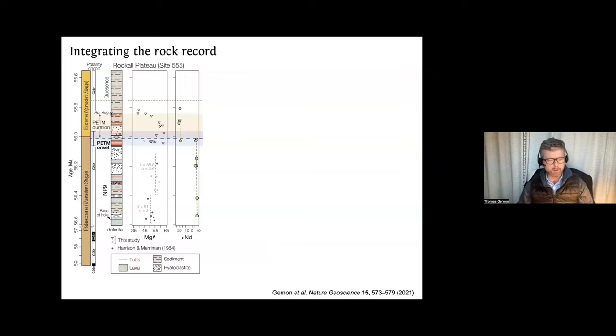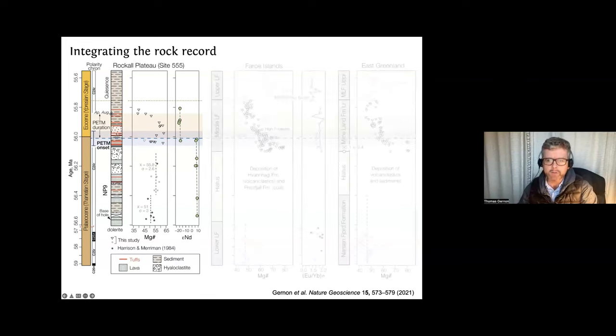So the way to test that is to go to the rock record. We investigated about 10 years ago the Rockall Plateau, which was drilled in the 1980s. We revisited some core. And what we find is an interesting increase in the volcanism, the frequency of volcanic tuffs at this time during the PTM, which have interesting geochemical signatures, which suggests a diversity of compositions located in and around the Greenland region. Do we see this more broadly in this region? The answer is yes.